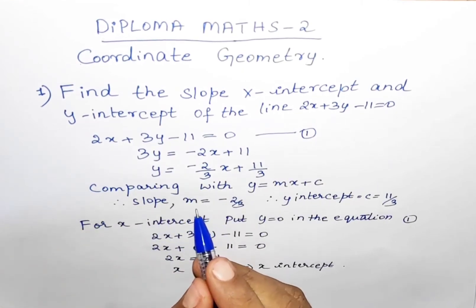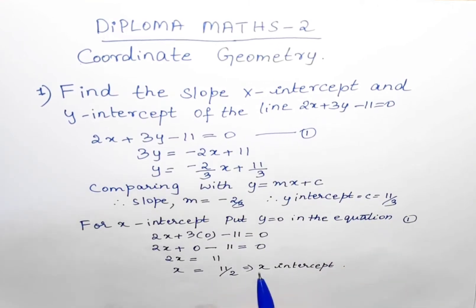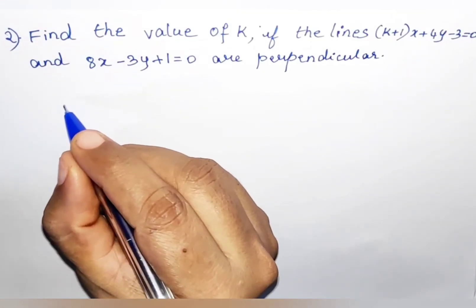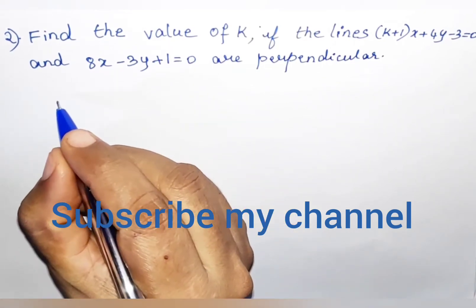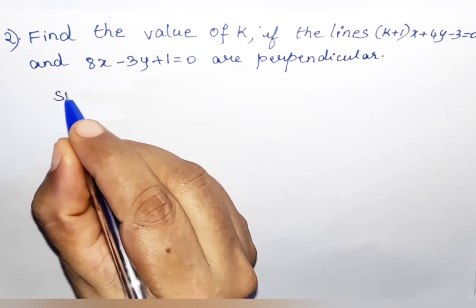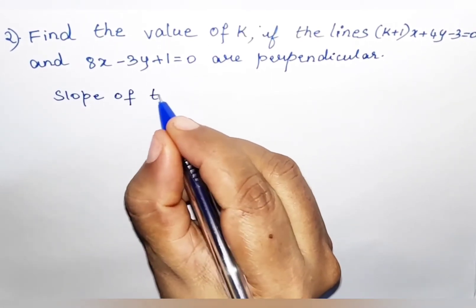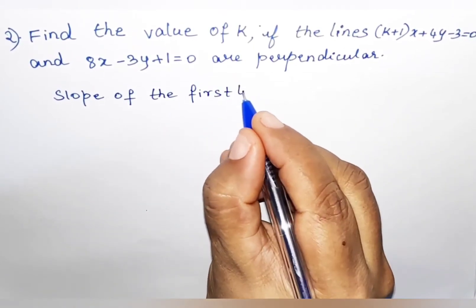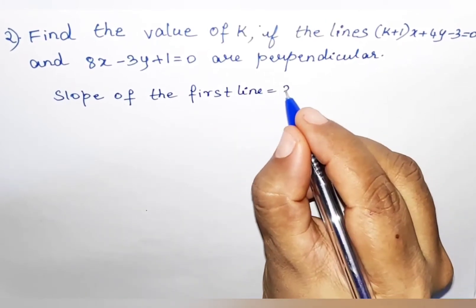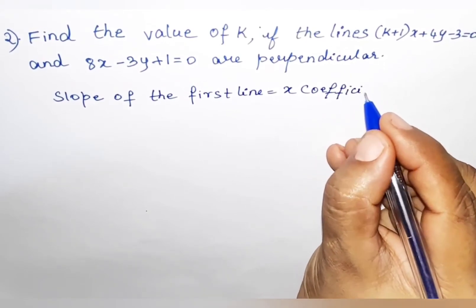So in problem 1 we have found slope m = -2/3, y-intercept = 11/3, and x-intercept = 11/2. Hence we have solved problem number 1. Now let us solve problem number 2: find the value of k if the lines (k+1)x + 4y - 3 = 0 and 8x - 3y + 1 = 0 are perpendicular.